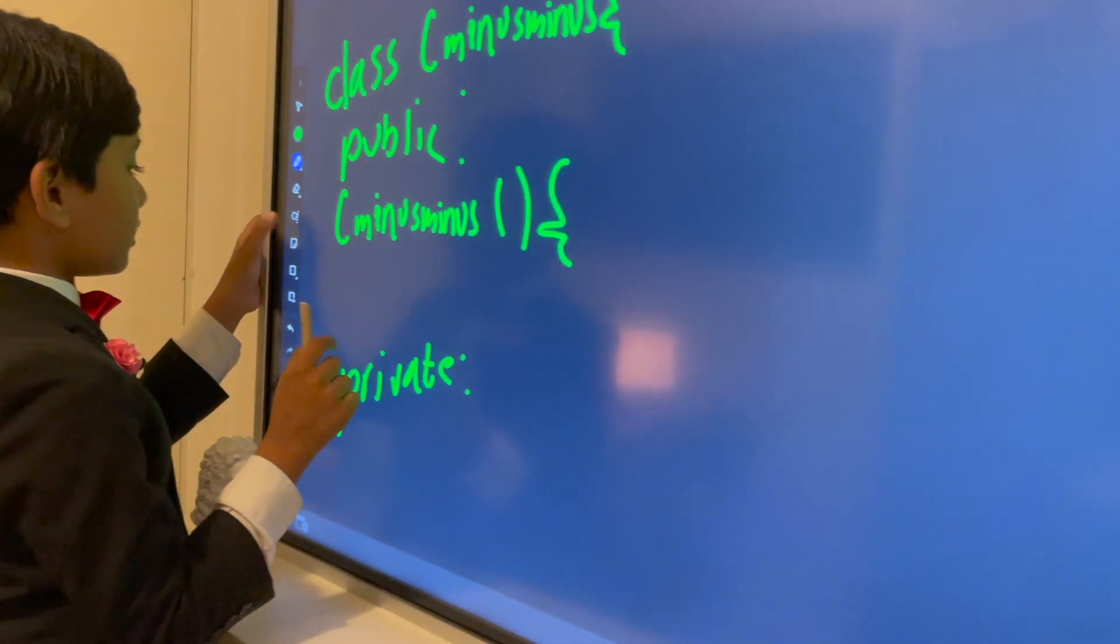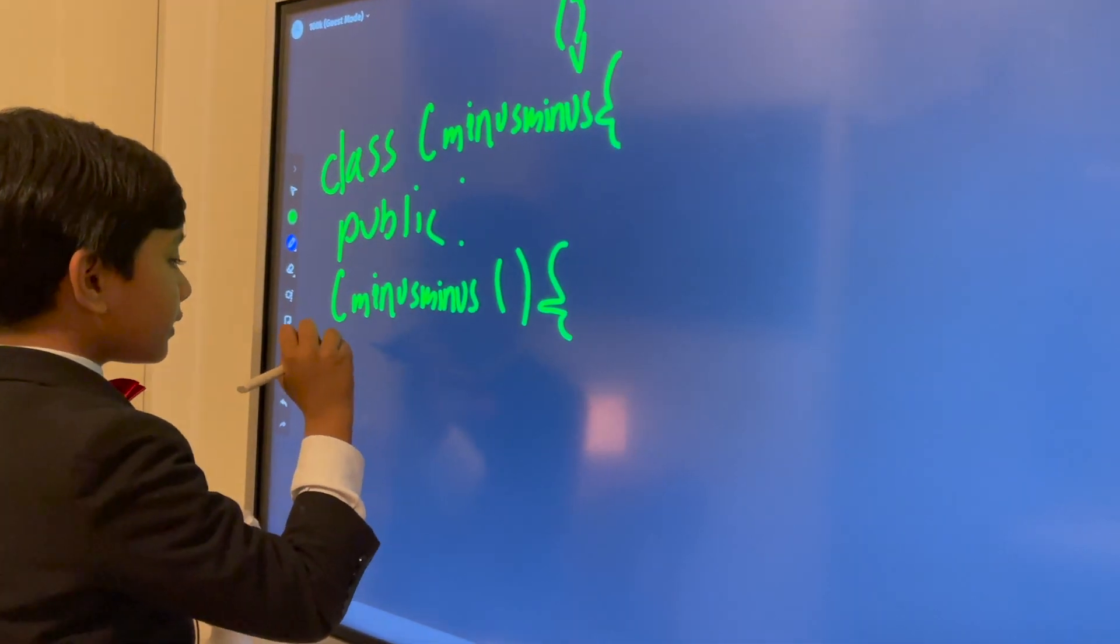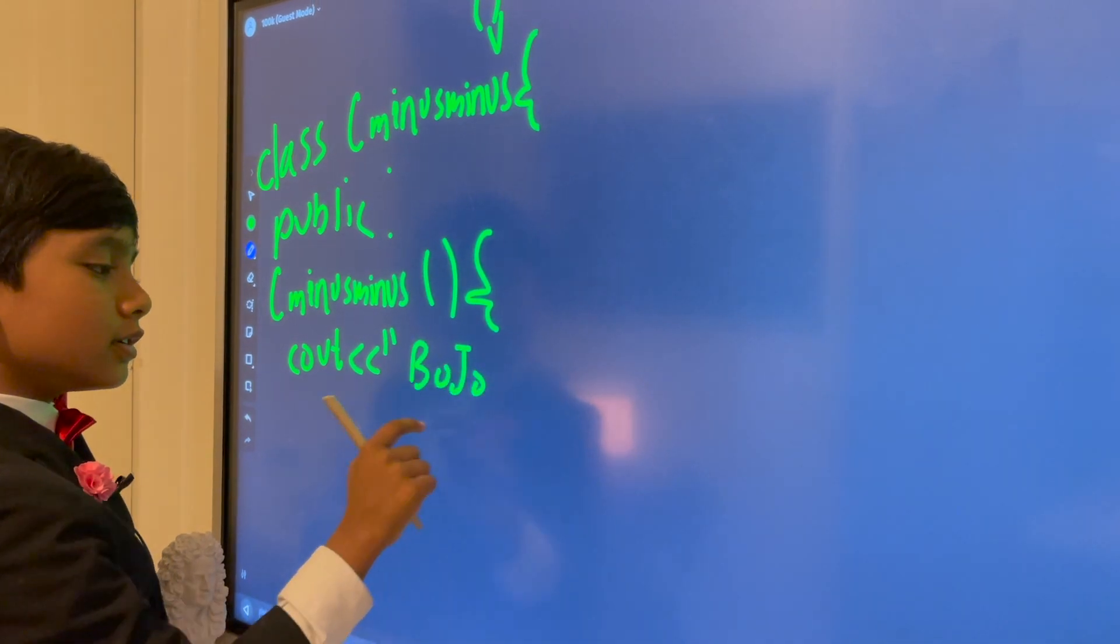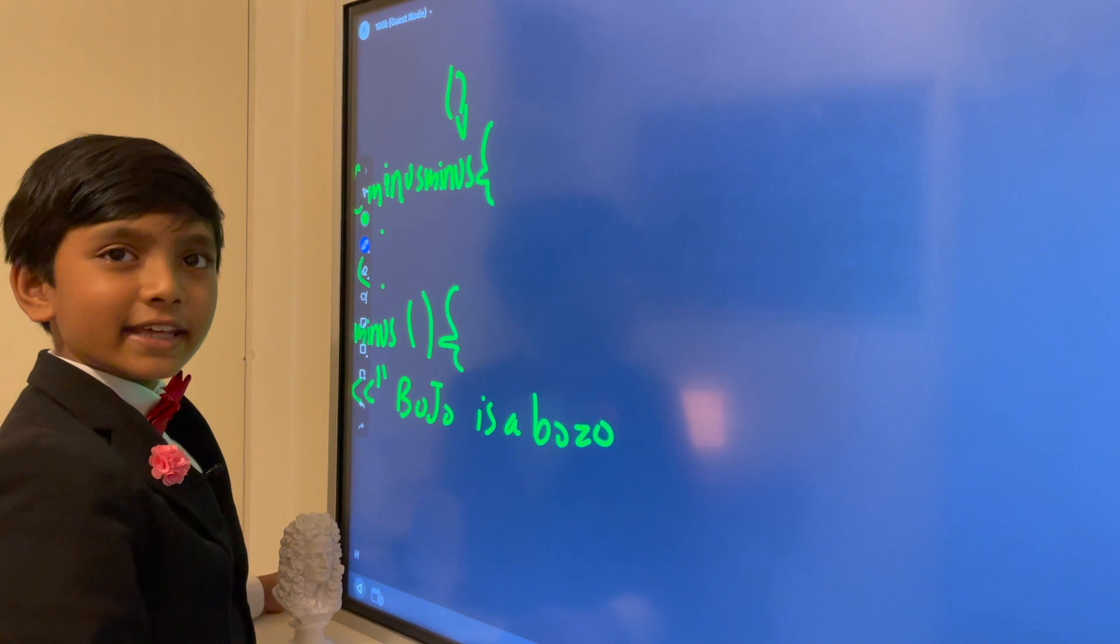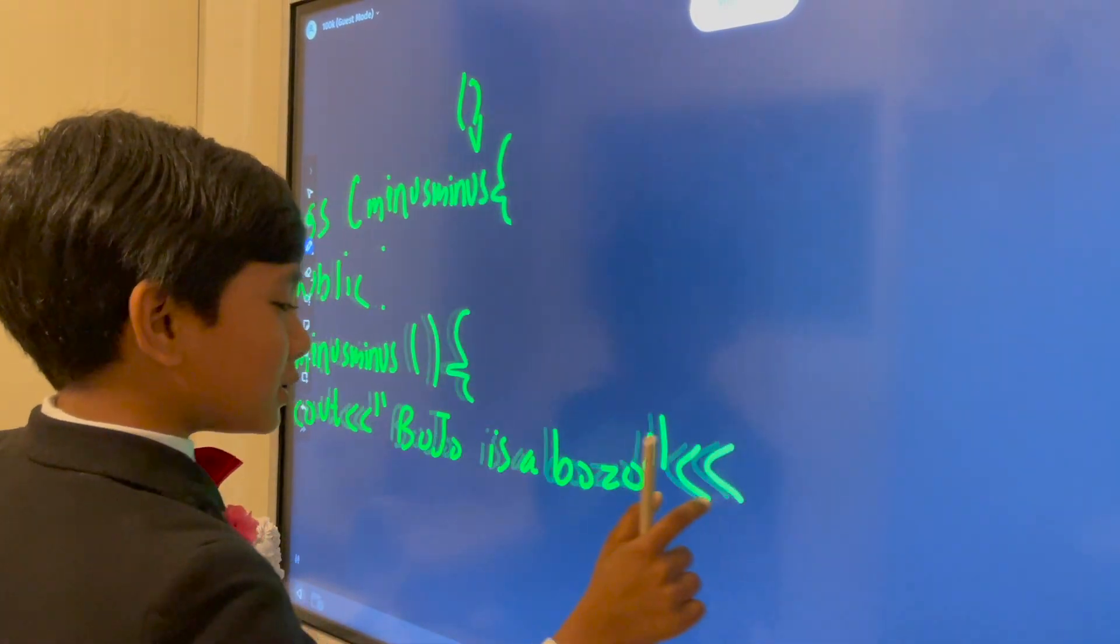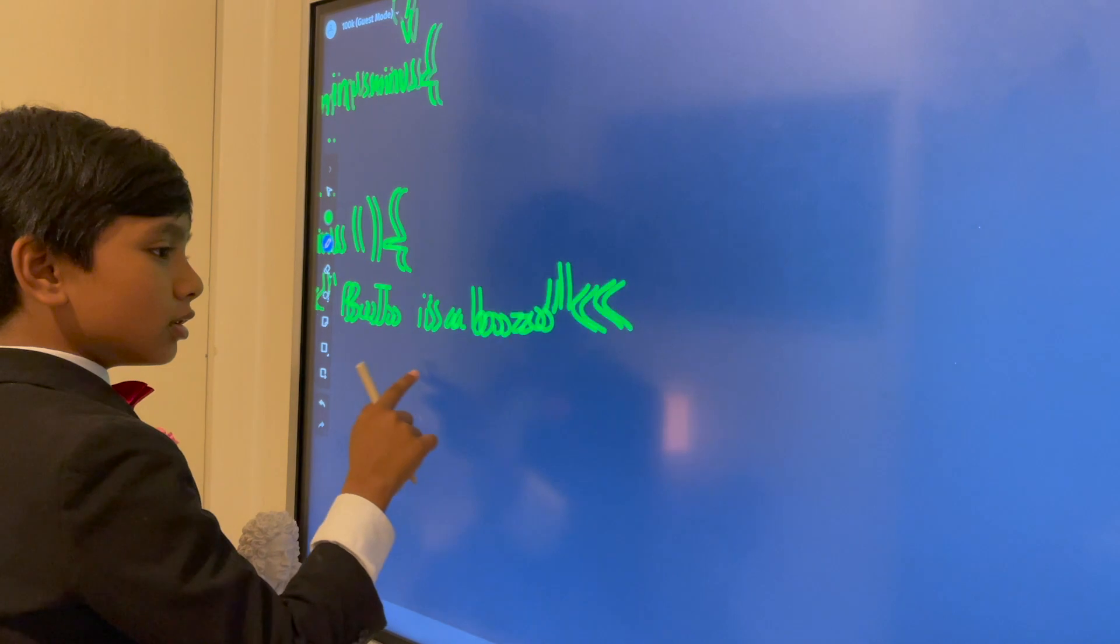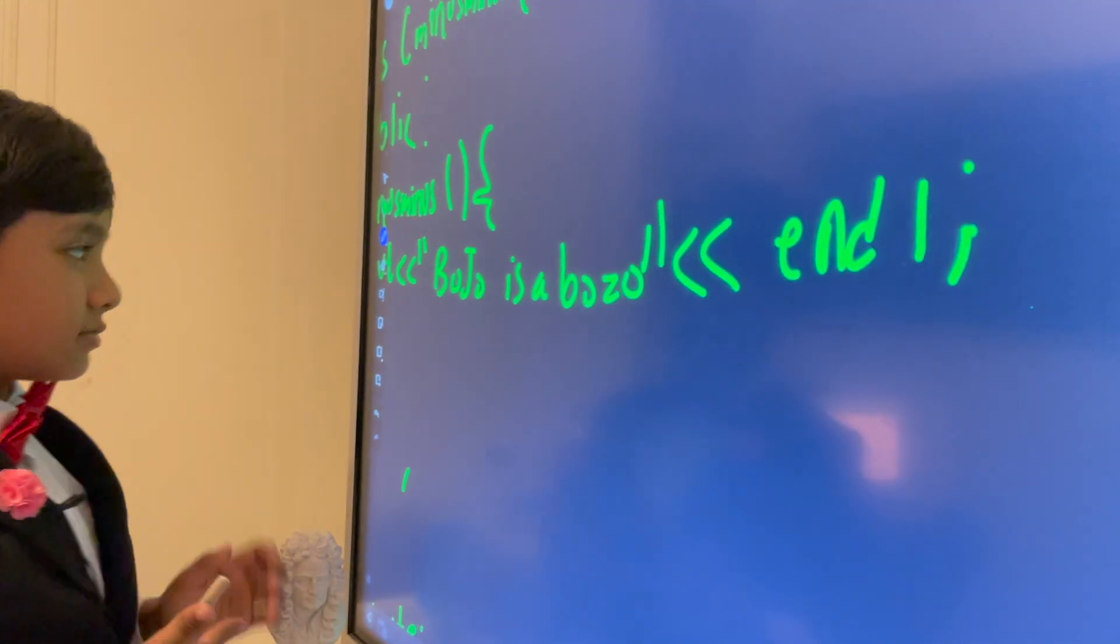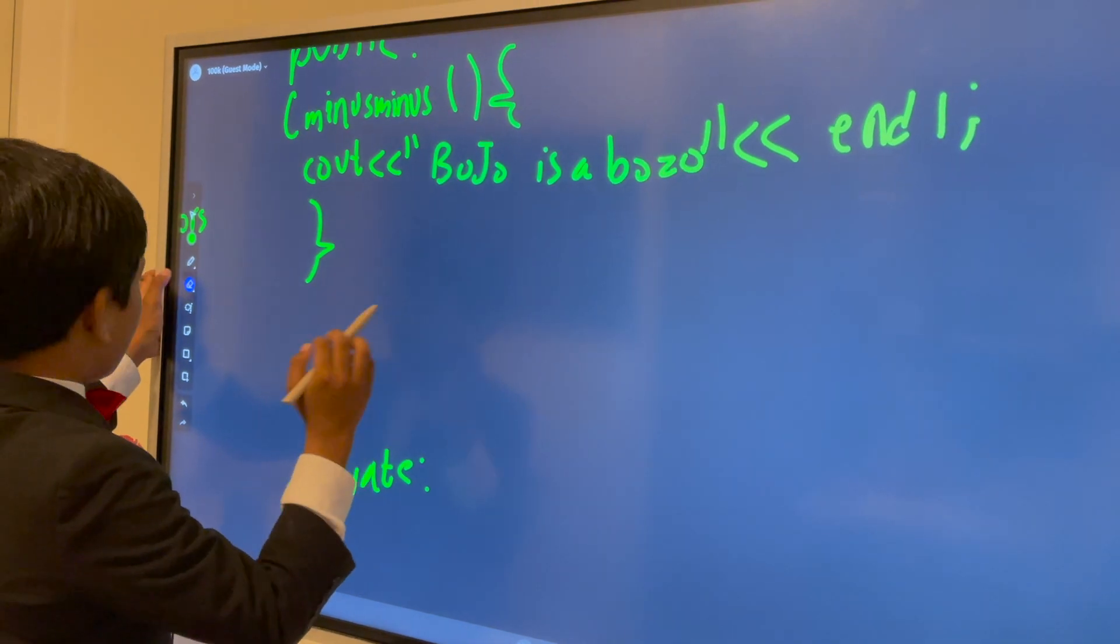So, what I'm going to do is I'm going to put cout Bozo is a bozo. And then you have an endl. So, this is what we're going to print. And we're just going to put that back.